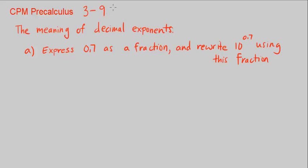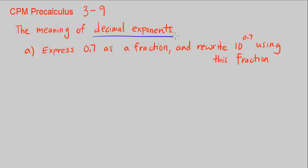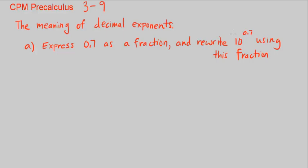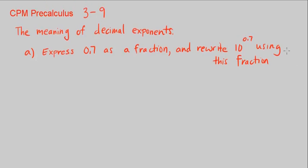This is CPM Pre-Calculus Chapter 3, Number 9. Here we're going to look at the meaning of decimal exponents. Part A says to express 0.7 as a fraction, then rewrite 10 to the power of 0.7 using this fraction.